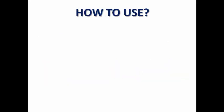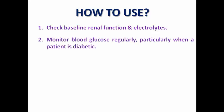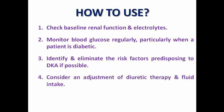Before prescribing SGLT2 inhibitors, we need to check kidney function, as GFR must be above 20. We also need to monitor blood glucose regularly in diabetic patients due to the risk of hypoglycemia if prescribed with other antidiabetics. In susceptible patients, we should identify and eliminate risk factors for ketoacidosis after discussing with the endocrinologist. After starting SGLT2 inhibitors, we may need to reduce the diuretic dose and advise the patient about adequate fluid intake, since the significant diuretic and natriuretic effect may predispose to dehydration and pre-renal failure when taken with large doses of diuretics.